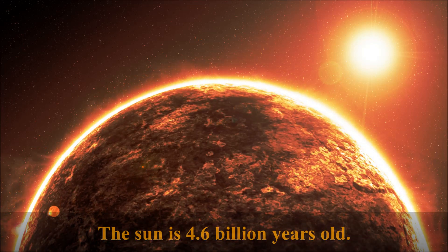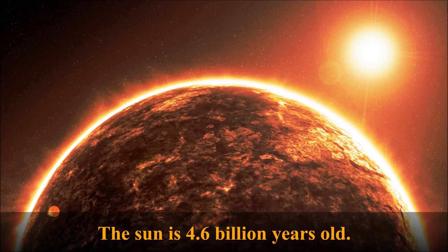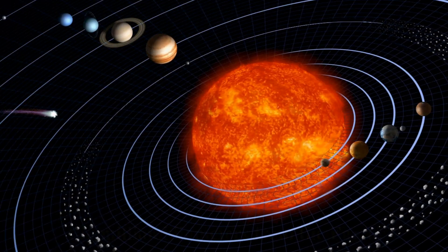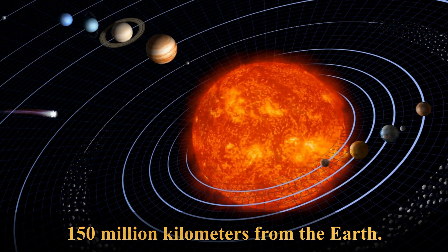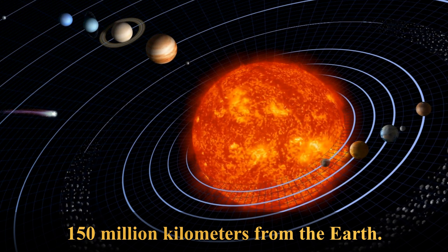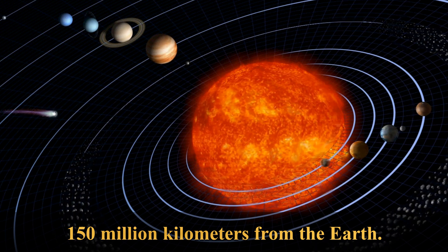The Sun is 4.6 billion years old. The Sun remains an average distance of 150 million kilometers from the Earth. This is 391 times further away than the Moon.